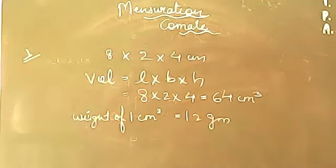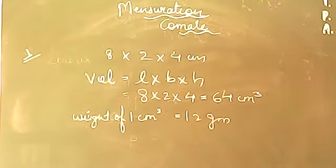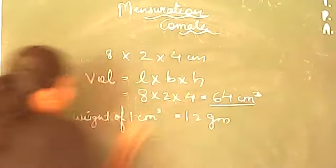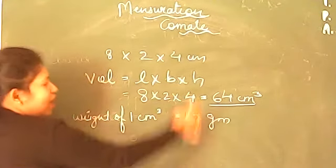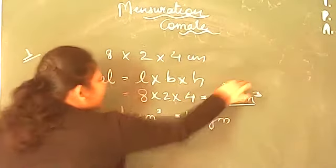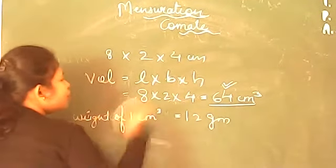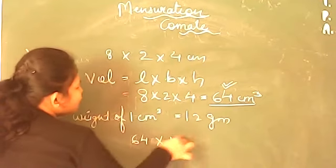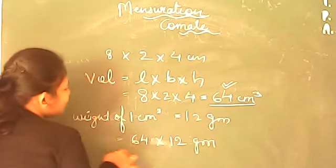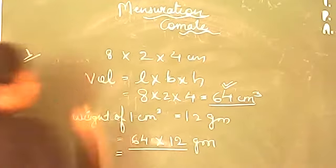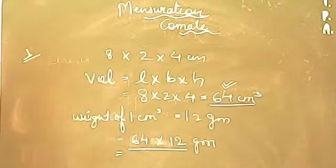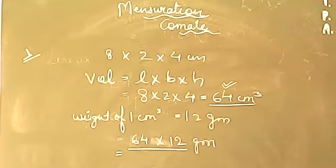So 64 cubic centimeters is the total iron needed to make the box. Since one centimeter cube iron weighs 12 grams, and the total box is 64 cm³, the total weight = 64 × 12 grams. Please multiply that and find the answer for this question.